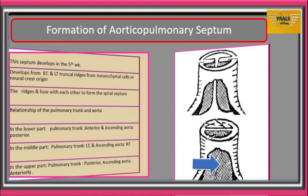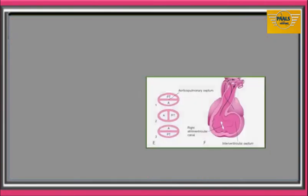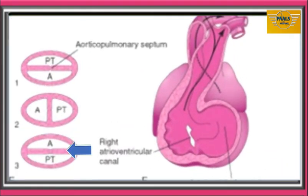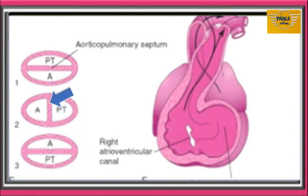Because the pulmonary trunk and aorta are separated by a spiral septum, their relationship differs at lower, middle, and upper parts. In the lower part, the spiral septum is in the coronal plane, so the pulmonary trunk is in front and the ascending aorta is posterior. In the middle part, the spiral septum is in the sagittal plane so that the pulmonary trunk and ascending aorta are side by side, with the aorta on the right and pulmonary trunk on the left. In the upper part, the spiral septum is again in the coronal plane, but here the aorta lies anteriorly and the pulmonary trunk lies posteriorly.